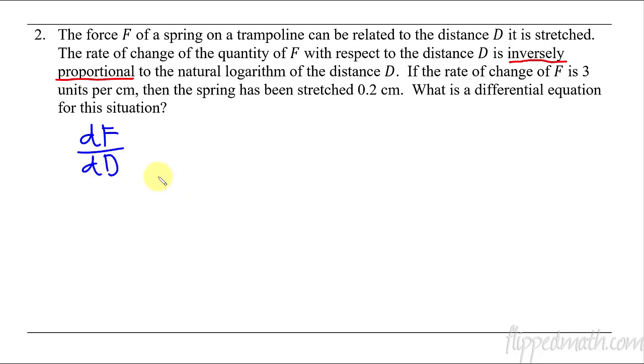So we've got the rate of change of F, so dF/dD with respect to the distance D. dF/dD is going to equal, it's inversely proportional, so I will have a fraction with a k on top. Or if you prefer, you could have said k times one over something. And what? It's inversely proportional to the natural logarithm of the distance. So we're going to have the natural logarithm of D.